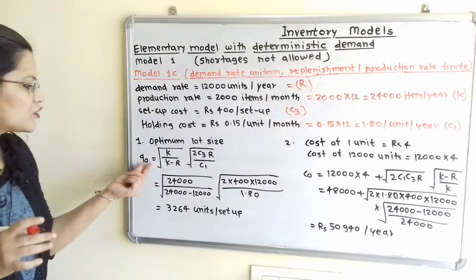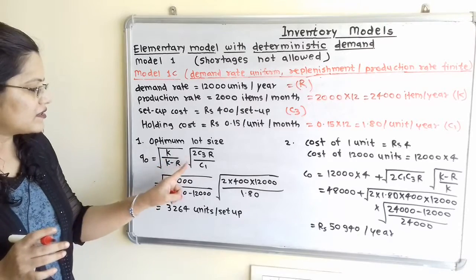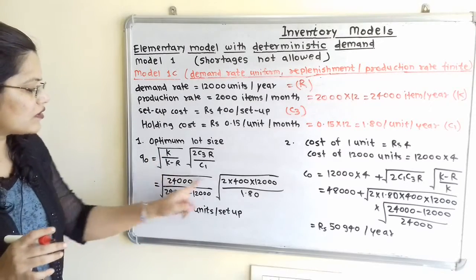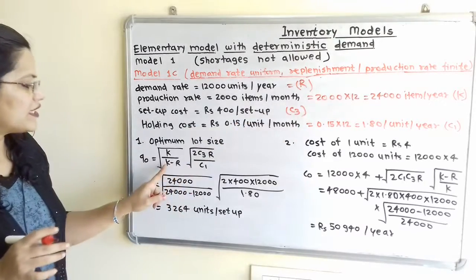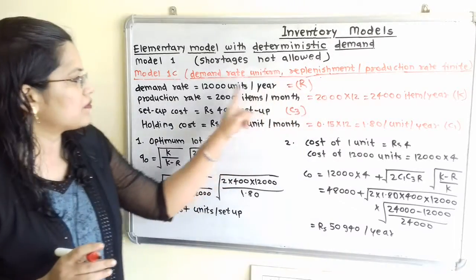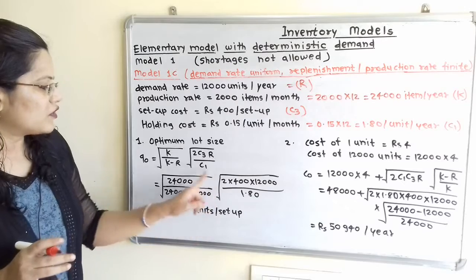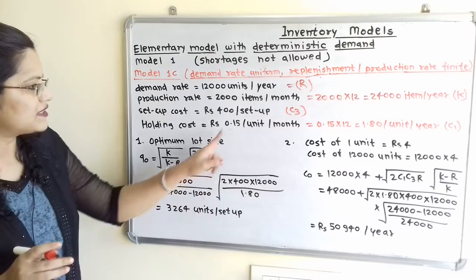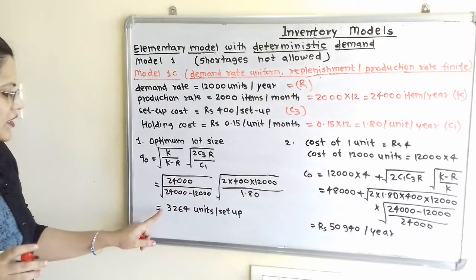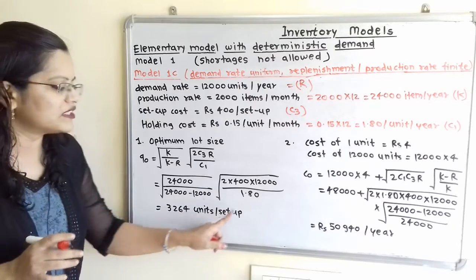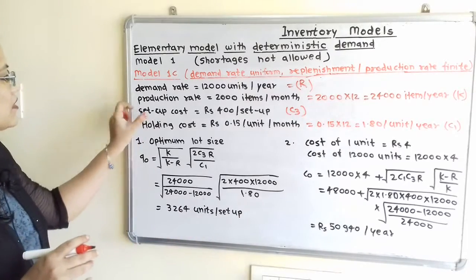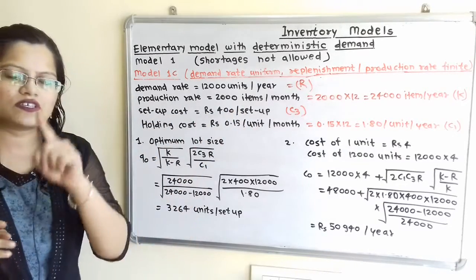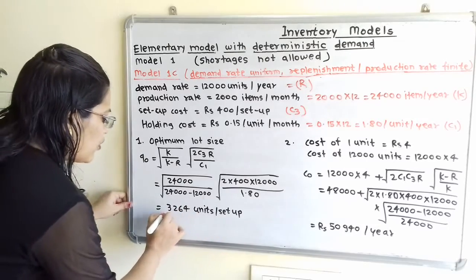Optimum lot size: QO = sqrt(K/(K−R)) · sqrt(2·C3·R/C1) = sqrt(24,000/(24,000−12,000)) · sqrt(2 × 400 × 12,000 / 1.80). Solving this gives QO = 3,264 units per setup.